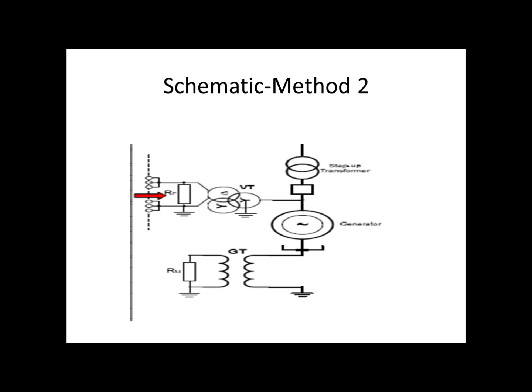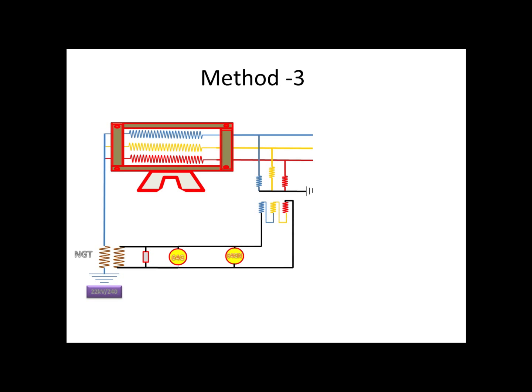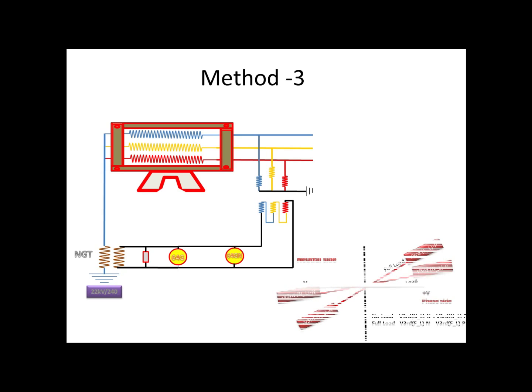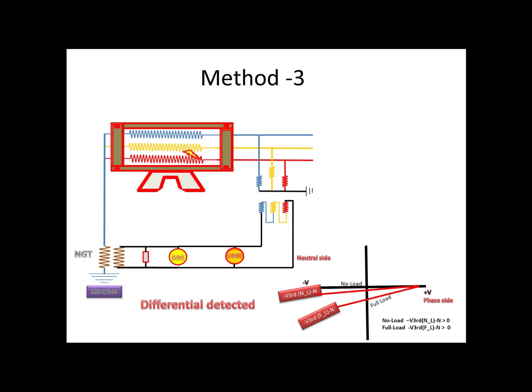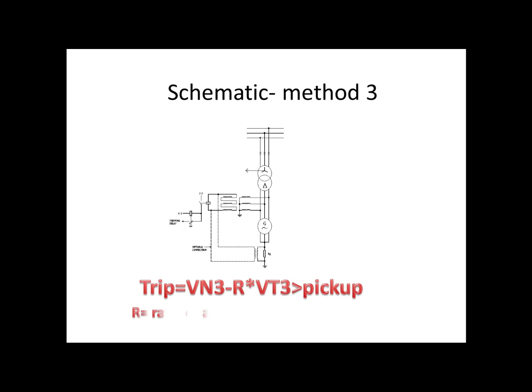Now we go for the third method. In this method, the relay will get both the neutral side voltage and the phasor side open delta voltage, and it will compare the voltage just like differential protection. If the fault occurs on the neutral side, there will be a difference produced between both sides of the relay, and it can give a tripping command. And also if the fault occurs on the phasor side, there will also be a difference produced between both sides, so in this case also the relay can give a trip command. For relay tripping, it has a formula: VN_min - R × VT, which should be lesser than the pickup value. This VN and VT is the third harmonic voltage of the neutral and phasor side.